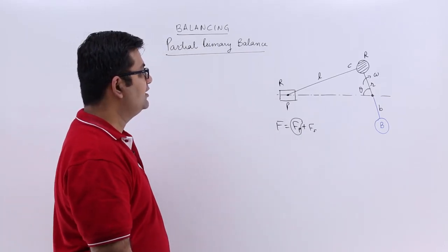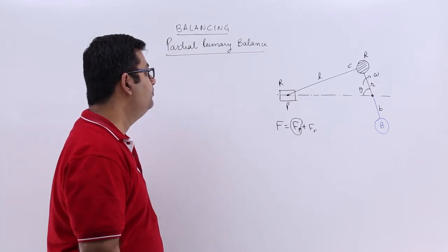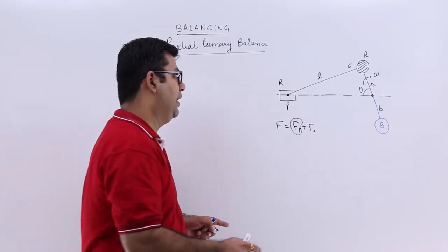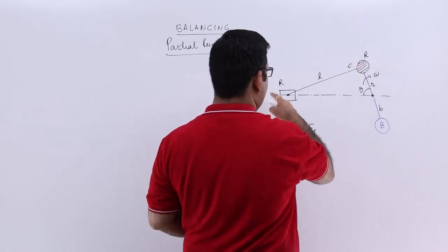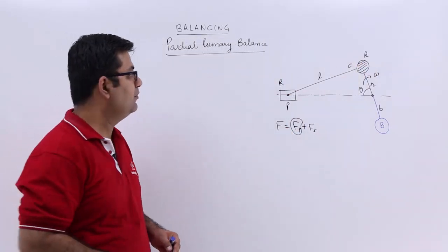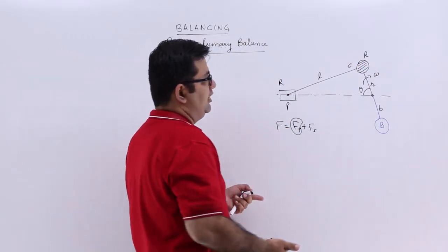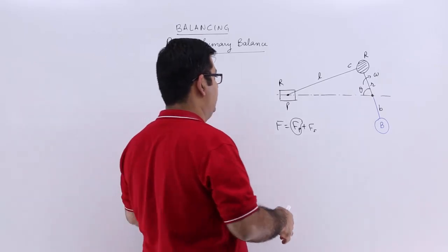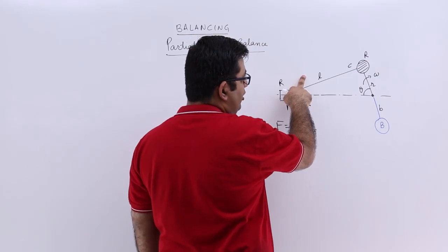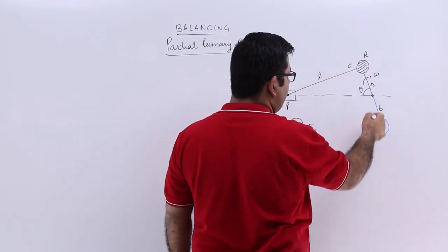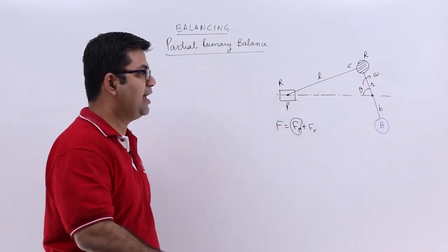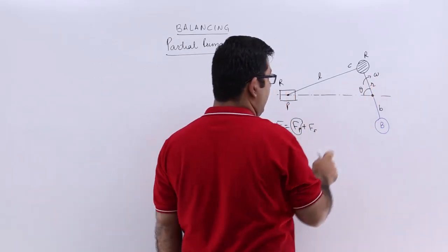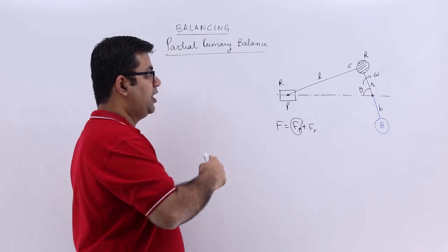So let us say this is the configuration given to you. The mass of the reciprocating parts is R. Also, it is the mass of the revolving parts or the rotating parts. P is the piston, L is the length of the conrod, C is the crank pin over here, R is the radius of the crank, and the crank is rotating at omega making an angle theta with the inner center.